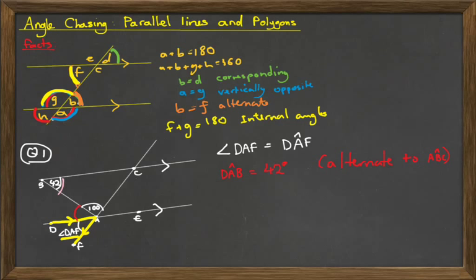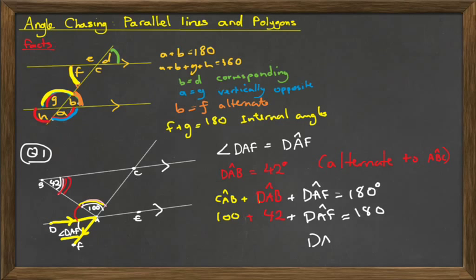So we know that that angle in red is 42 degrees. We also know that angle C, A, B, which is this angle here, plus angle D, A, B, which we've just found, plus angle D, A, F, which is the angle we're ultimately trying to find, is 180 degrees, because they lie in a straight line. If I replace the letters here with the angles they are, so C, A, B is 100, D, A, B is 42, and D, A, F is the angle we're trying to find. So that means that DAF is going to be 180, take away 100, take away 42, that leaves us with 38 degrees. That's the answer to that question.